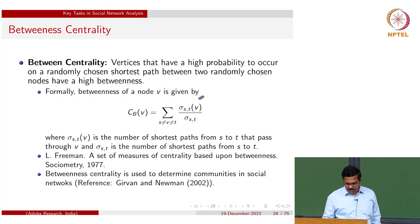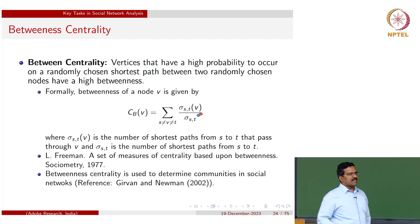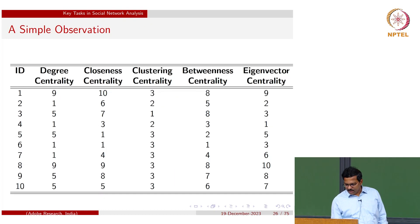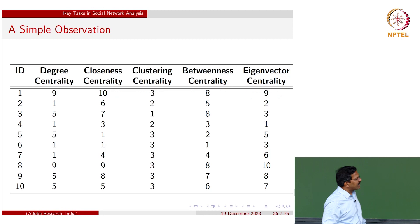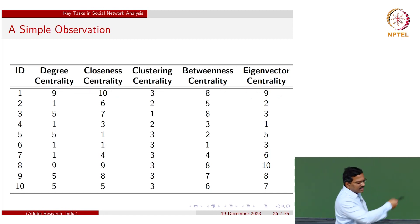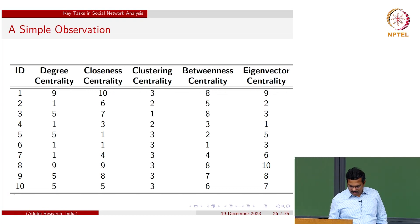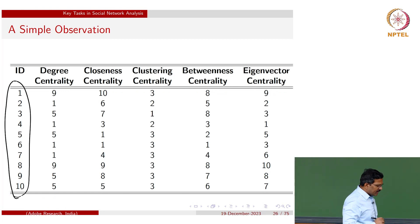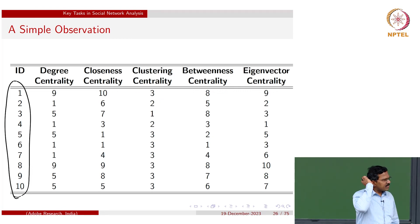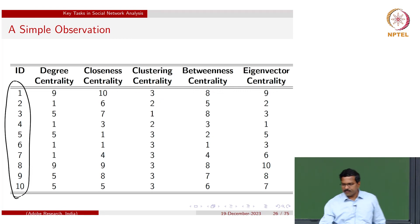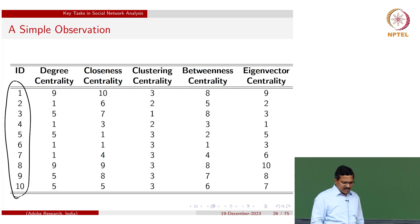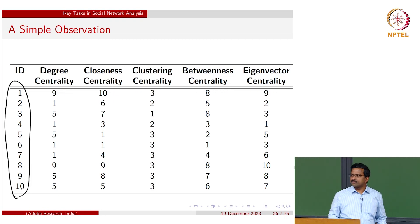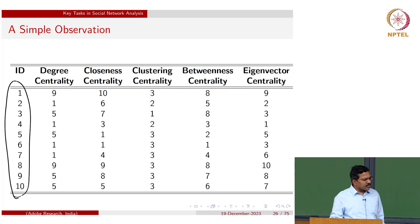Rather than calculating betweenness centrality manually, you just write a program to compute these numbers. Looking at the table of centrality measures for all 10 nodes in our running network, an interesting observation is that all the different centrality measures give different results.